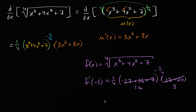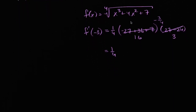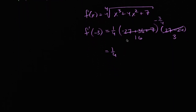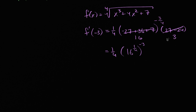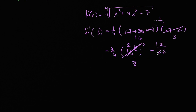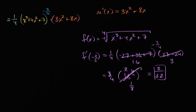Now what is 16 to the negative three-fourths? This is one-fourth times 16 to the one-fourth, then raise that to the negative three, times that three out front. 16 to the one-fourth is two; two to the third is eight, so two to the negative third power is one-eighth. So we have three-fourths times one-eighth, which equals three over 32. That would be the slope of the tangent line of the graph y equals f of x when x is equal to negative three.